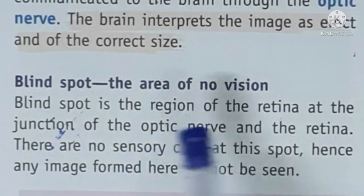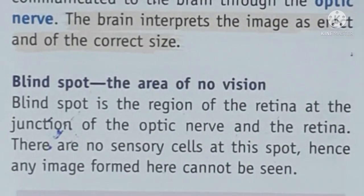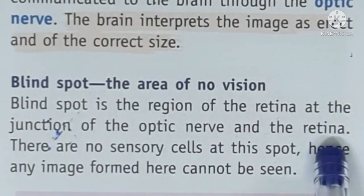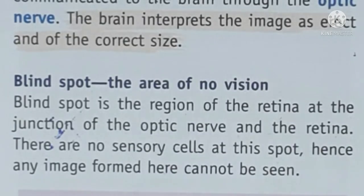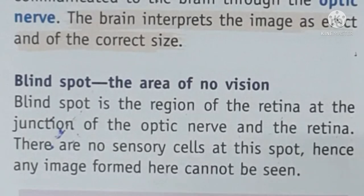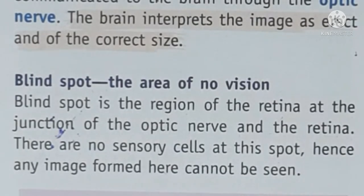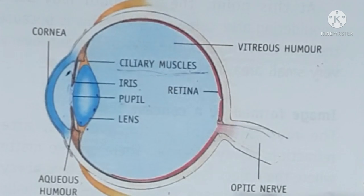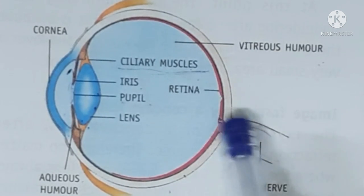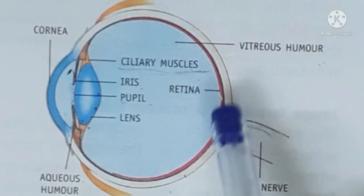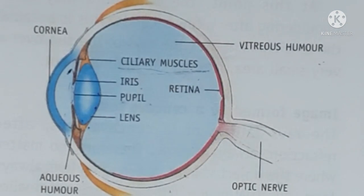At the junction of the optic nerve and the retina. Toh junction ka matlab hota hai jahan woh dono meet kar rahe hain — optic nerve aur retina. Toh jahan pe bhi optic nerve aur retina ek doosre se meet karti hain, on the retina, us spot ko hum blind spot kehte hain. So as you can see in the image, this is the retina. Aur jo aapka optic nerve hai woh yahan se bahar nikal raha hai. Toh optic nerve aur retina is point pe meet kar raha hai — so yoh aapka blind spot hai.